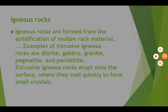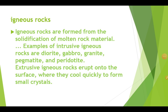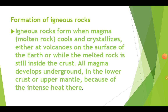Today I am going to explain you about igneous rocks — types of igneous rocks, how igneous rocks are formed, and some examples of igneous rocks. Igneous rocks form when magma, molten rock, cools and crystallizes either at volcanoes on the surface of the earth or while the melted rock is still inside the crust.